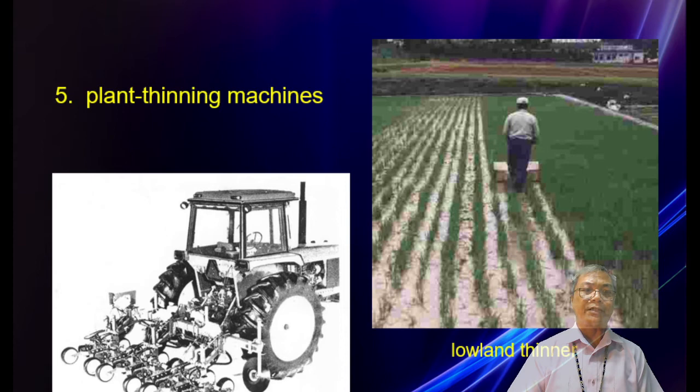Number five is plant thinning machines. On the left is the upland thinner, and on the right is the lowland thinner. The purpose of the cultivator is to destroy weeds and improve soil condition.